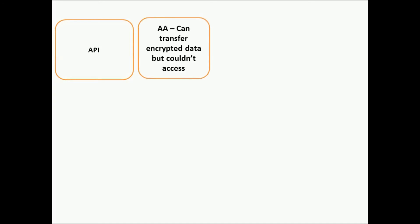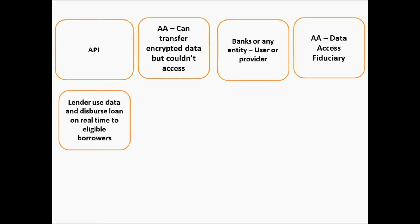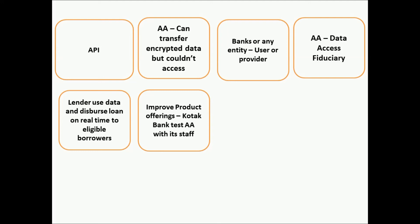The API — Application Programming Interface — is an interfacing tool between computers and mobile phones, a set of tools through which data is sought and presented based on consent. Account aggregators can transfer data in encrypted format. They are regulated entities, but account aggregators cannot access the data for their own benefit and cannot sell the data. The account aggregator acts as a fiduciary — like a guardian of the data acting in trust — they cannot use the data for their own benefit.